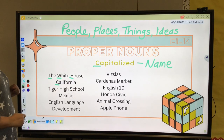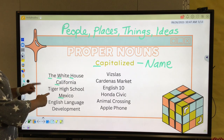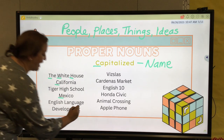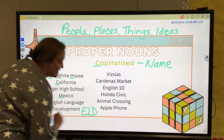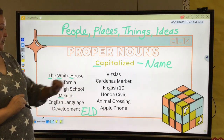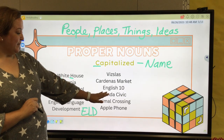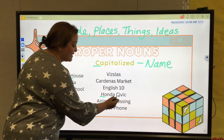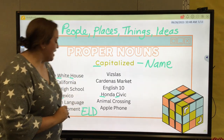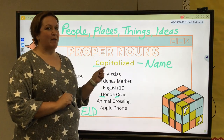Tiger High School is the name of the high school. Mexico — that's where my family's from — capital letter. Common noun would be a country; Mexico would be the proper noun version. English Language Development, the name of this course — you might also see it as three capital letters: E-L-D. Then we have Bichlas, which are Bradley's dogs. The Cartenas Market, English 10, Honda Civic — Honda's the name of the company and Civic is the name of that car. Animal Crossing, and Apple Phone. When using proper nouns, remember they are names and we want to make sure we capitalize those.